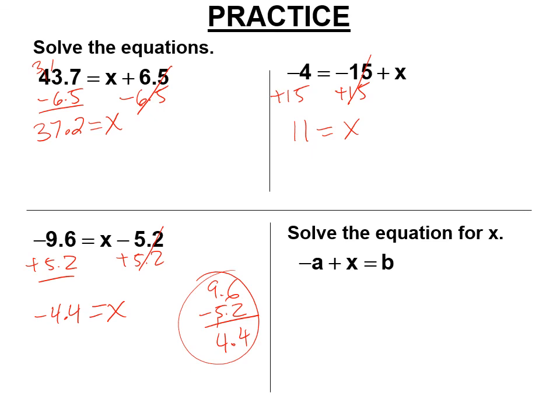Okay. Here, we're solving for x. So it's negative a. Look at the one right above it. If it's negative a, we're adding a to both sides. So x equals b plus a, which since the commutative property, you could write also a plus b. Either of those is great.